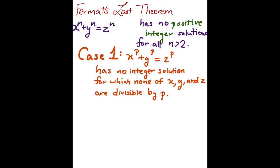In Case 1, x to the p plus y to the p equals z to the p has no integer solutions for which none of x, y, and z are divisible by p.